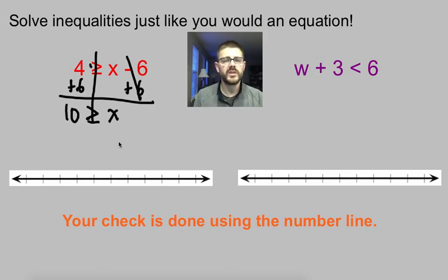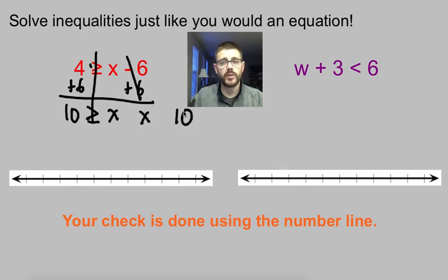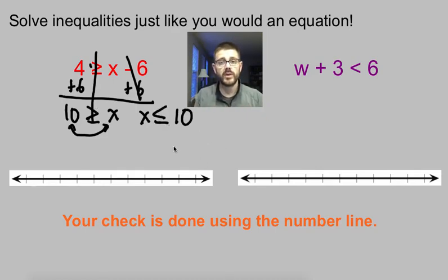One thing some of us are going to have trouble with is when the number comes first and then the variable — it gets challenging to make sure we shade the right direction on our number line. Sometimes you can rewrite your inequality: you can flip it around and switch the variable and the number. But remember, when you switch the order of those two pieces, you've got to switch the inequality. It basically flips backwards, so it becomes x is less than or equal to 10.